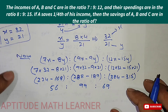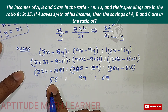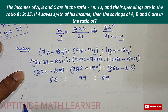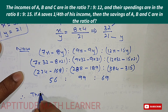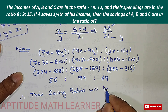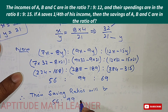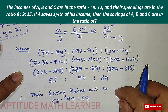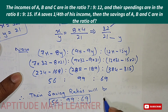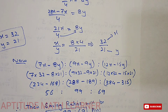We have found the savings ratios for A, B, and C. Therefore, their saving ratio is 56 : 99 : 69. Thank you very much, I hope you completely understood.